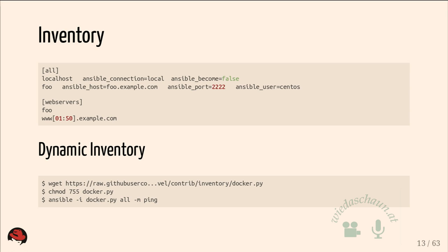With dynamic inventory, if we create a container with Ansible we can use it later in the same play without specifying it in the static inventory file — which is really handy. Similarly, if you have 100 instances in AWS, you don't want to specify all of them manually; you can just use dynamic inventory.